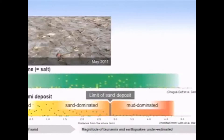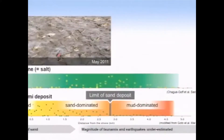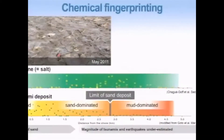This graph shows the concentration of chlorine — a component of salt — from the shore to about 5 kilometers inland. The darker area in the middle, between about 1.5 and 3.5 kilometers inland, is where most of the salt was deposited. So you can use chemical fingerprinting to identify the mud that was deposited by the tsunami.